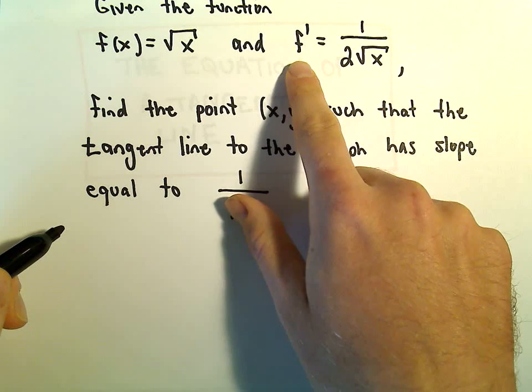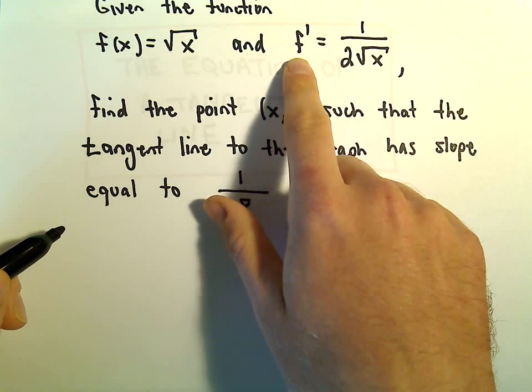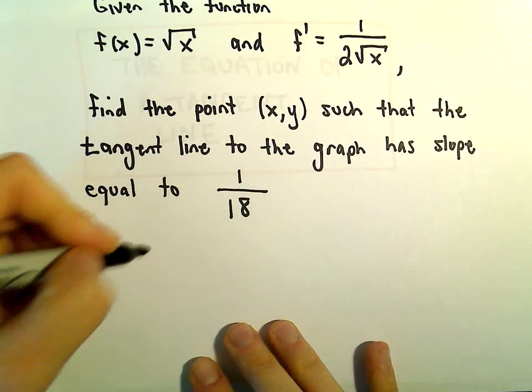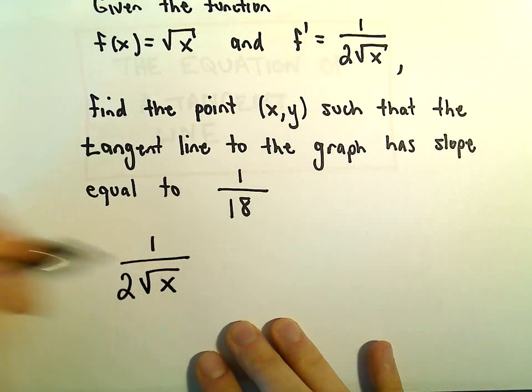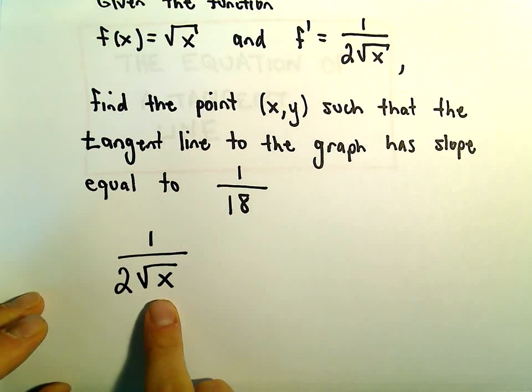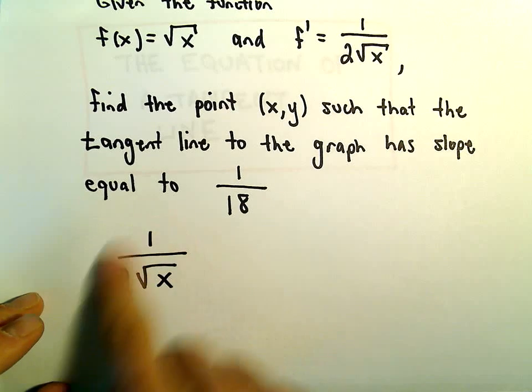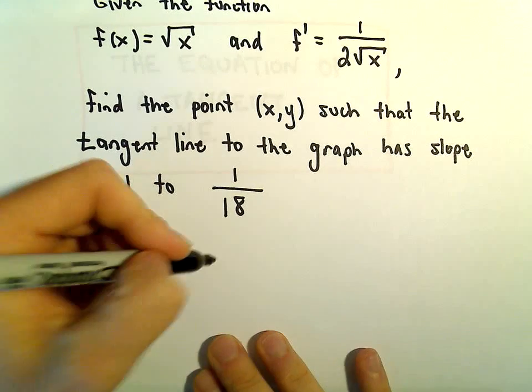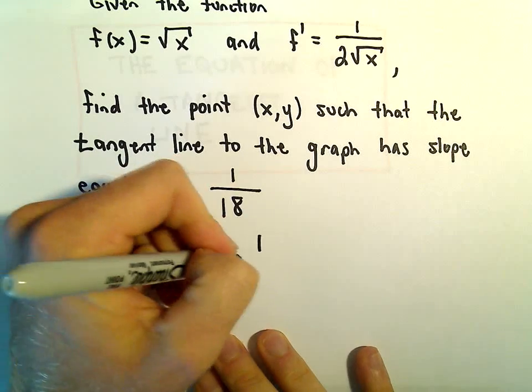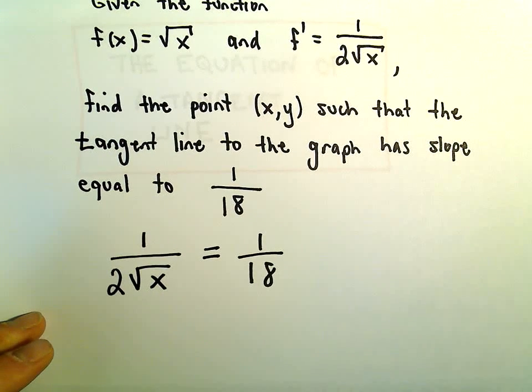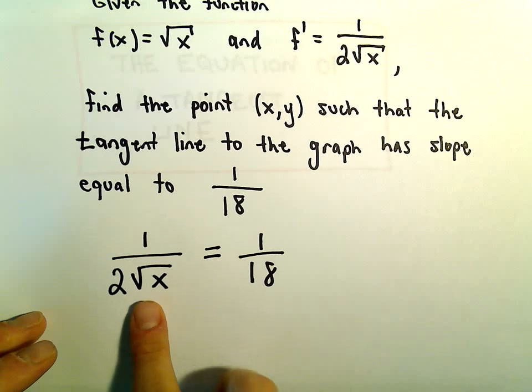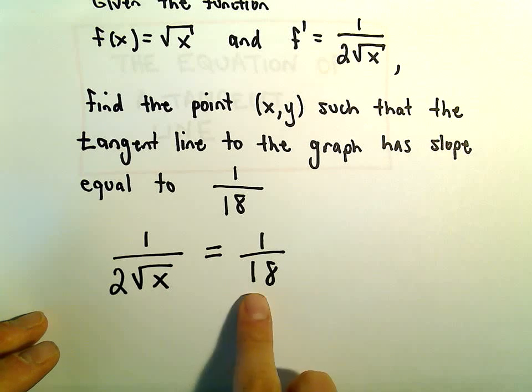Our formula for the slope of the tangent line at any particular x-coordinate is given by 1 over 2 times the square root of x. We want that to equal 1 over 18. So all we have to do in this case is solve the equation 1 over 2 square root of x equals 1 over 18.